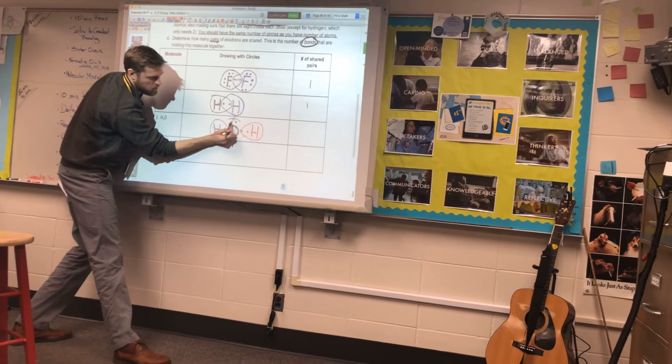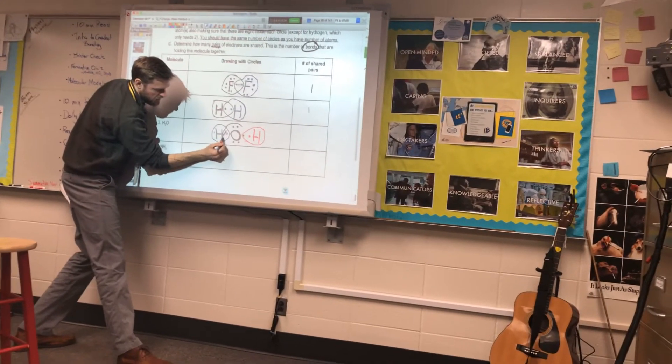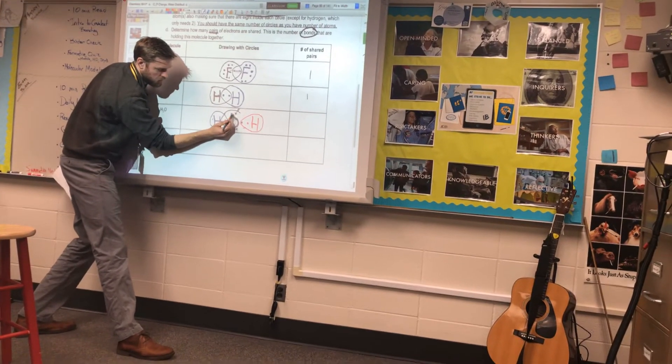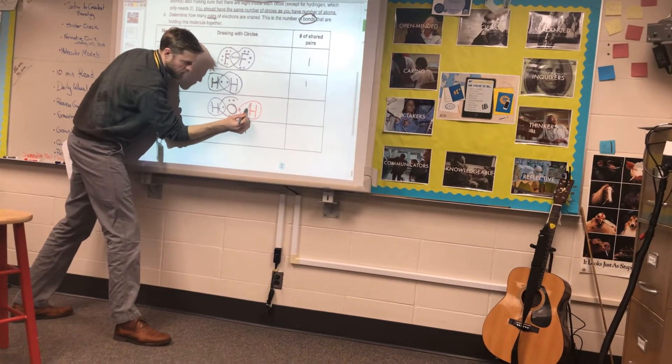So let's make sure we count them out here. We've got one, two, we've got three, and then I'm going to snag that one. So now I'm up to one, two, three, four, five, six, seven, and I'm going to borrow that guy.